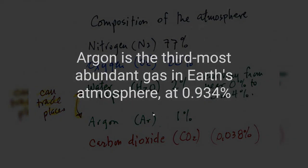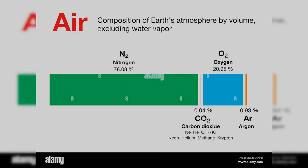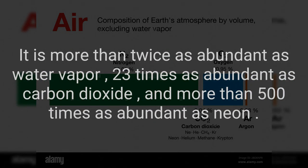Argon is the third most abundant gas in Earth's atmosphere, at 0.934%. It is more than twice as abundant as water vapor, 23 times as abundant as carbon dioxide, and more than 500 times as abundant as neon.